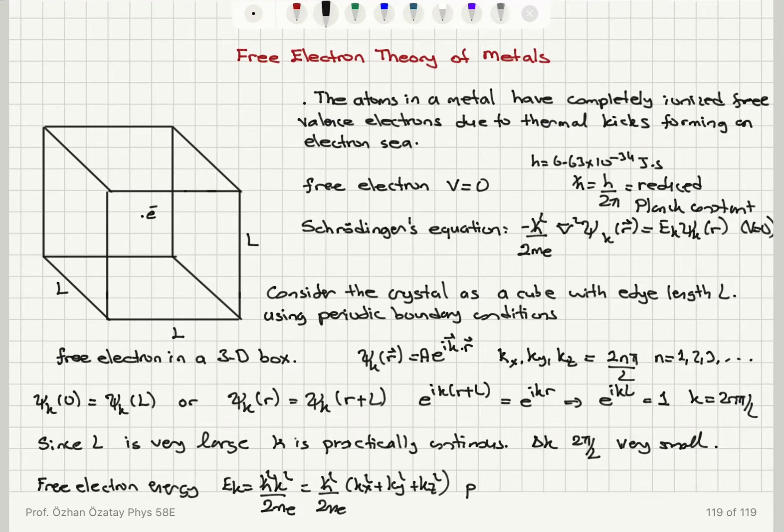The momentum of the electron is h/λ, the de Broglie relationship, which is (h/2π)(2π/λ). This is ℏk so that the energy levels are p²/(2m), which is the kinetic energy.